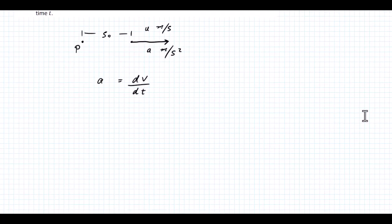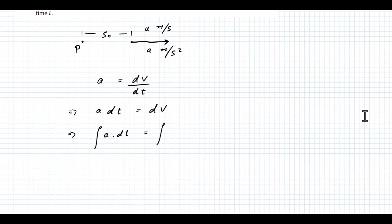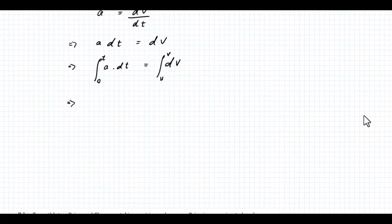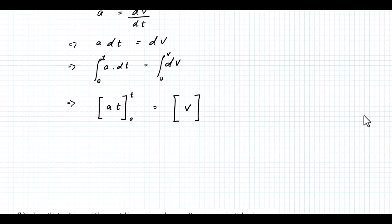What we can do is separate out the dt, so we've got A dt equals dV. The next thing we can do is integrate both sides — integrate A with respect to T, and integrate dV. Now T goes from 0 to T, and velocity goes from U to V. On the left-hand side, integrating A gives At, with limits 0 to T. On the right-hand side, integrating dV gives V, with limits U and V.